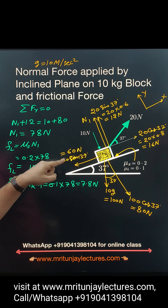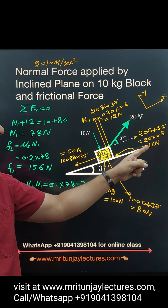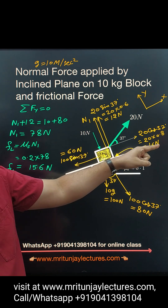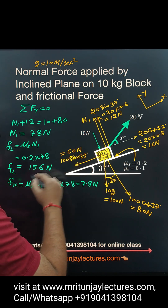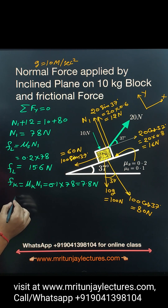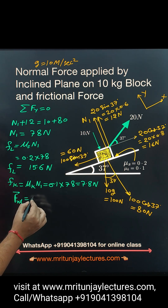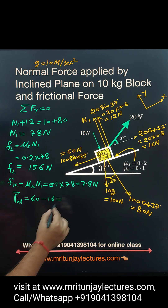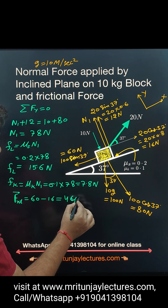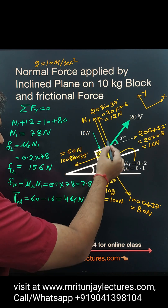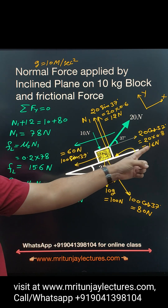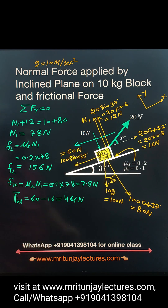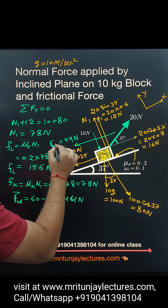Now, here we have 60 Newton and 16 Newton acting along the X-axis. The net driving force is 60 minus 16, which equals 44 Newton. The net force develops in the downward direction along the plane because 60 Newton is greater than 16 Newton. This 44 Newton is called the driving force.